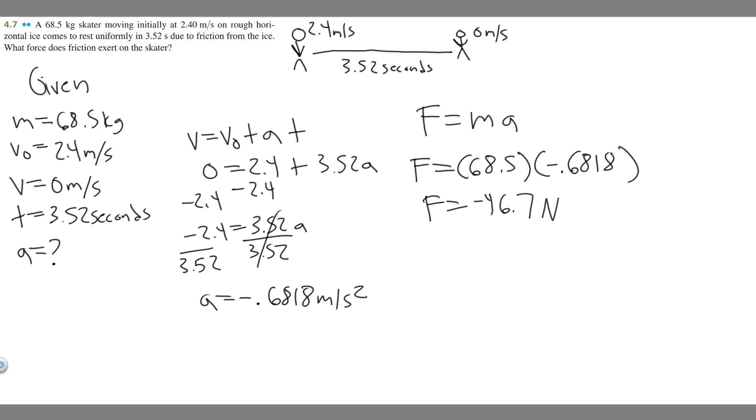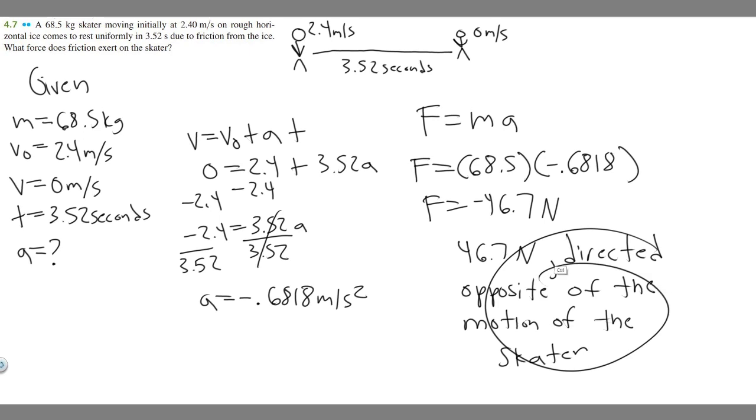But the way they want you to answer this is you're actually going to make it positive because this is how you would describe it with direction. But you just want to say the force they're exerting is 46.7 newtons. And then it's going to be directed opposite of the motion of the skater. So this is how they want you to write it. So just keep in mind, since it's negative, it's going to be in the opposite direction. So this is how they write it. But this is just a more exact answer. This is the actual force. So this right here is going to be your actual answer.